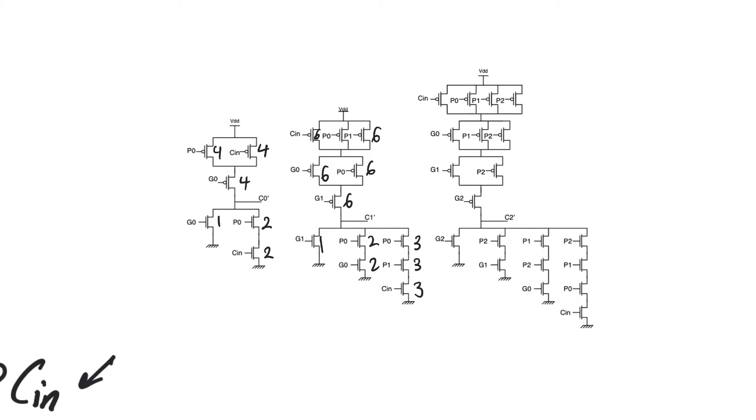Let's think about CL at the output node of C0. CL is going to be equal to 4 plus 2 plus 1. And for this one, it's going to be 6 plus 1 plus 2 plus 3. For this one, we're going to have 12 in the PMOS and in the NMOS we're going to have 1 plus 2 plus 3 plus 4.